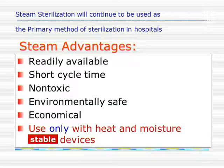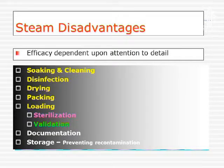The advantages of steam sterilization are that it's readily available, not very expensive, and non-toxic. The only limitation is that only heat-stable items can be autoclaved. Efficacy depends not just on autoclaving, but on how you clean and disinfect the instrument — reducing the bioburden from 100 million to 1 million makes the process easier. Packing, drying, and loading are all important, and you'll see these practically in the video following this.